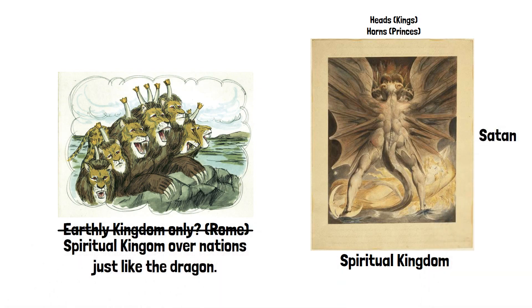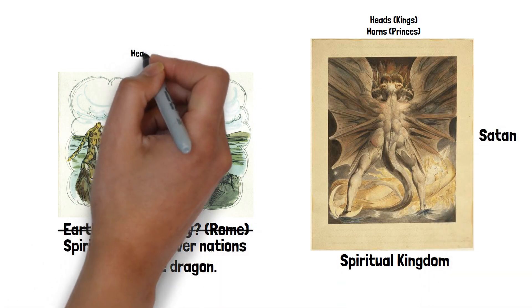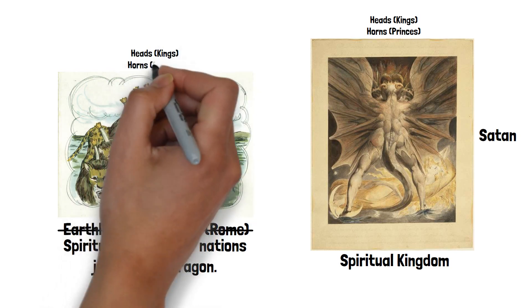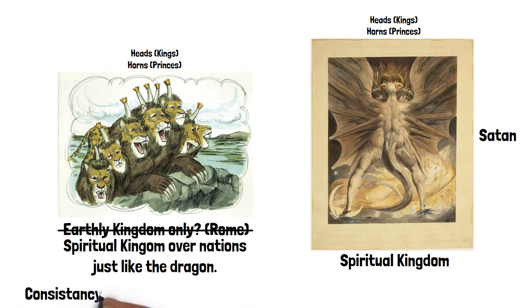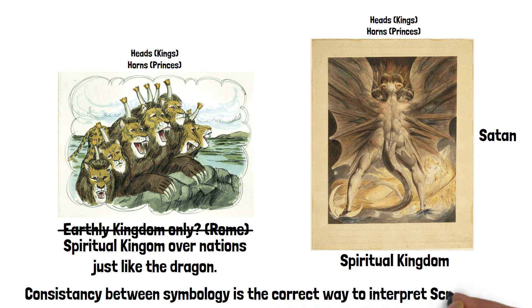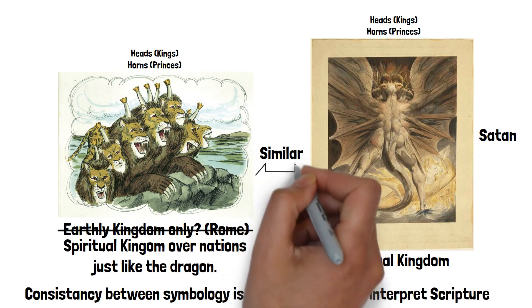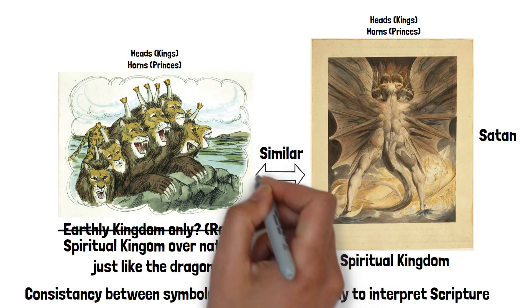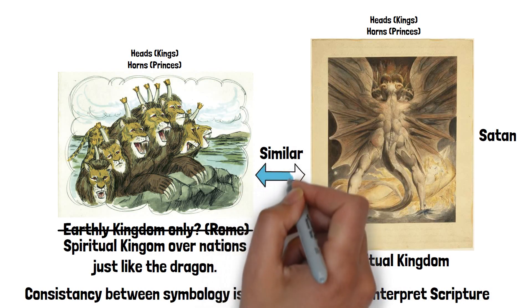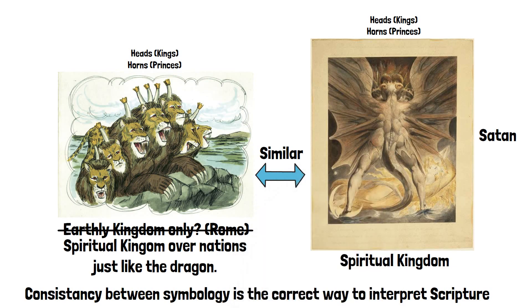I believe that this form of selective hermeneutics is an incorrect method of interpretation, and not one scripture endorses itself. Symbology is consistent, and as such, the only way to interpret the beast consistently is to see it as similar to the dragon, and with all of the scriptural context in mind. And when this is done, it is easy to see that the beast is of three primary aspects.